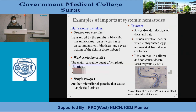Examples of important systemic nematodes are the filarial worms, which include Onchocerca volvulus, Wuchereria bancrofti, and Brugia malayi, as well as Toxocara. In the figure you can see microfilaria of Wuchereria bancrofti in the thick blood smear stained with Giemsa.